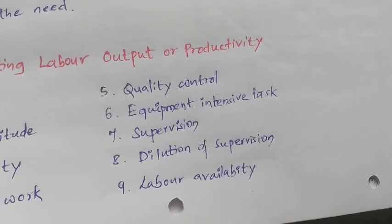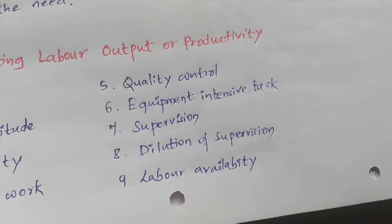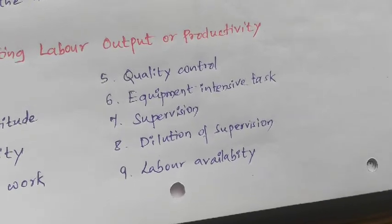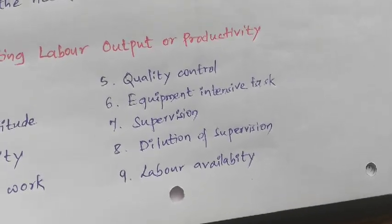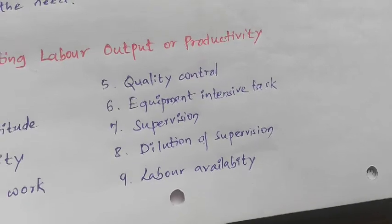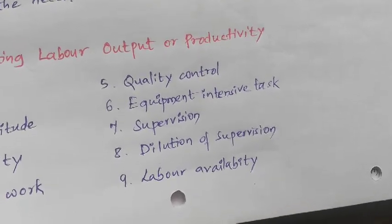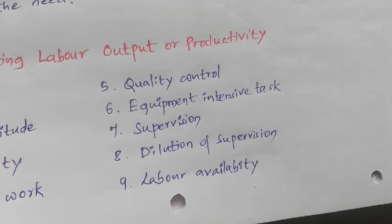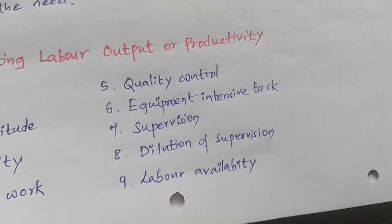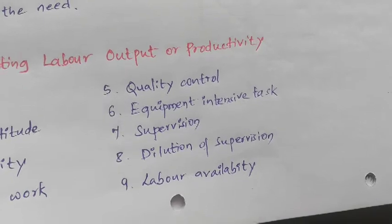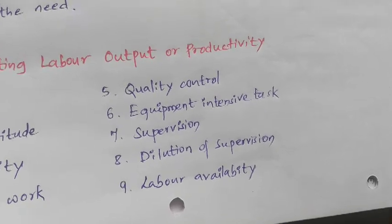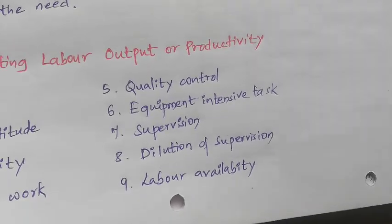Next is supervision. An efficient and effective supervision can get higher productivity from laborers. There is also the issue of dilution of supervision, which occurs when supervision is diverted from productive planned and scheduled work to analyze and plan contract changes, handle delayed materials, manage added crews or other added laborers, or deal with other changes not in the original work scope or schedule. Dilution is also caused by an increase in manpower or a congested work area without any increase in supervision.